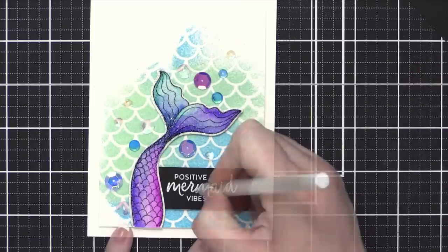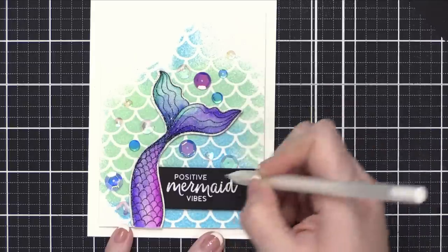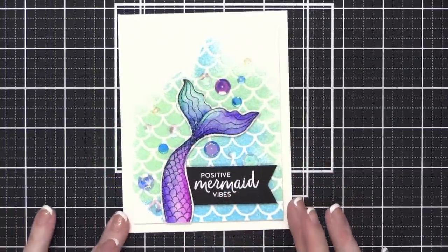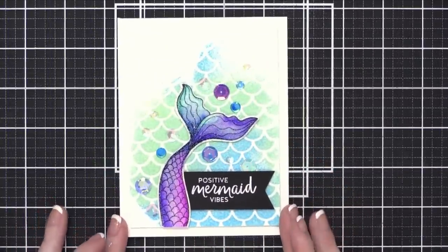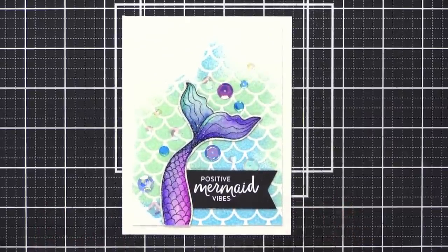The last thing I did was I took a white gel pen, and I just filled in some of those gaps on my embossing. I didn't have a really good impression with my ink, and so some of those areas had gaps. So I just used a white gel pen to fill in those areas. And that's my card for today. Hope you guys enjoyed. All of the supplies I used today are available at simonsaysstamp.com.